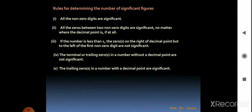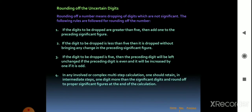Second rule: all zeros between two nonzero digits are significant, no matter where the decimal point is. Third rule: if the number is less than one, the zeros on the right of the decimal point but to the left of the first nonzero digit are not significant. Fourth rule: trailing zeros in a number without a decimal point are not significant. Fifth rule: trailing zeros in a number with a decimal point are significant.